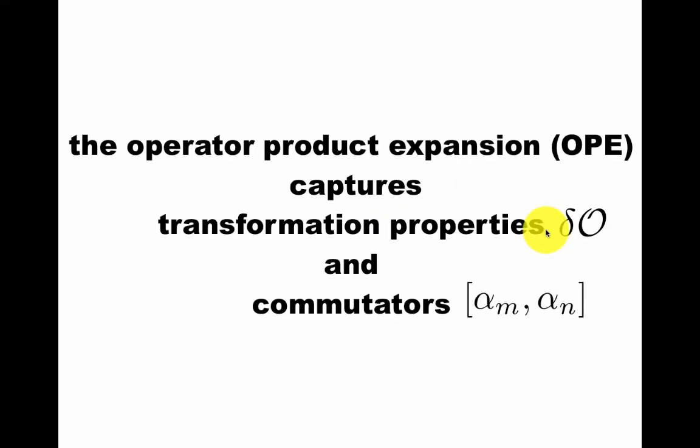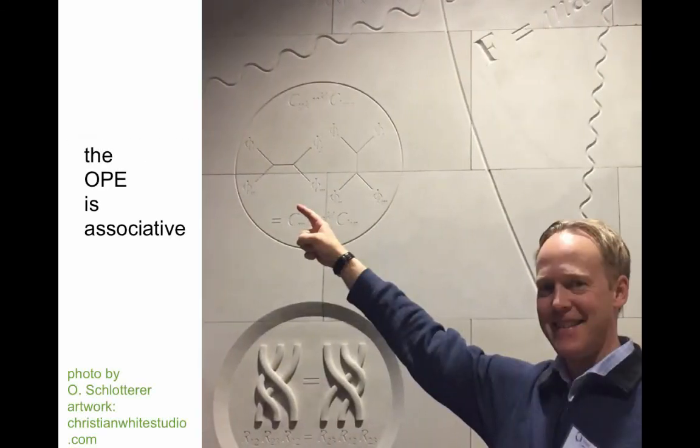Let's summarize. The operator product expansion captures transformation properties of an operator and commutators of modes associated with, for example, the embedding coordinates of the string. The OPE is associative, as beautifully pictured at the Simons Center by this artist. Thank you.